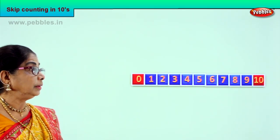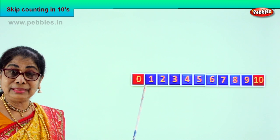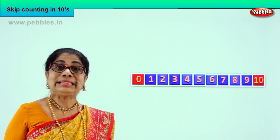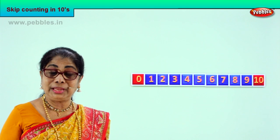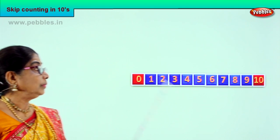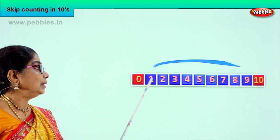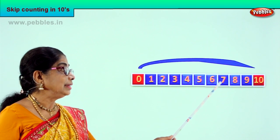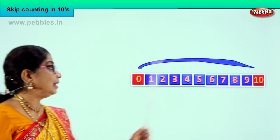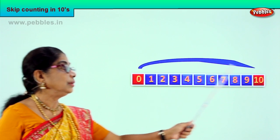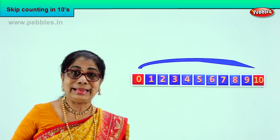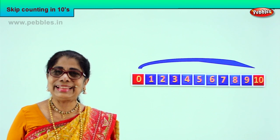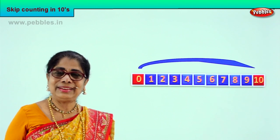Here we are, we have numbers zero to ten. Skip counting — how do we do the skip counting? Zero, one, two, three, four, five, six, seven, eight, nine, ten. So we jump from zero to ten. That is ten — one ten.